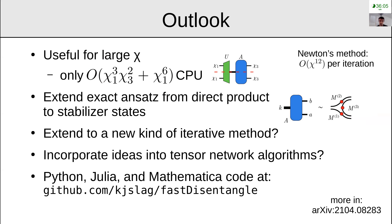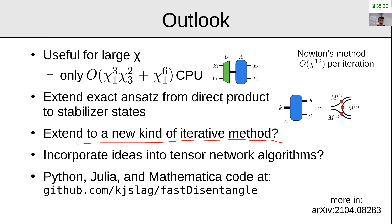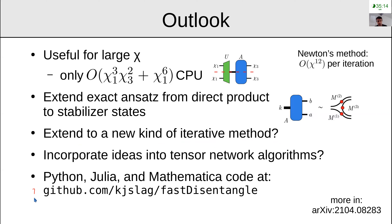However, there's a lot of work to do — the method performs very poorly for stabilizer states, for example a GHZ state. It only works well when you're close to the direct product state limit. It would be useful to extend the one-shot method to perform well for all stabilizer states. Maybe it could lead to a smarter iterative method, or these ideas could be incorporated into other tensor network algorithms. Code examples in Python, Julia, and Mathematica are available on GitHub.